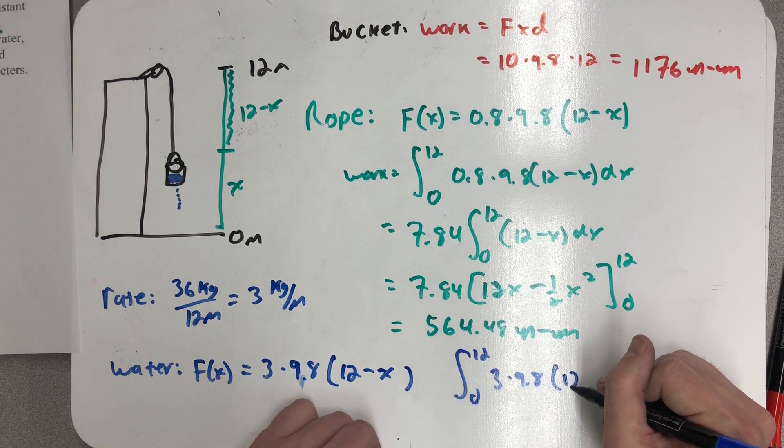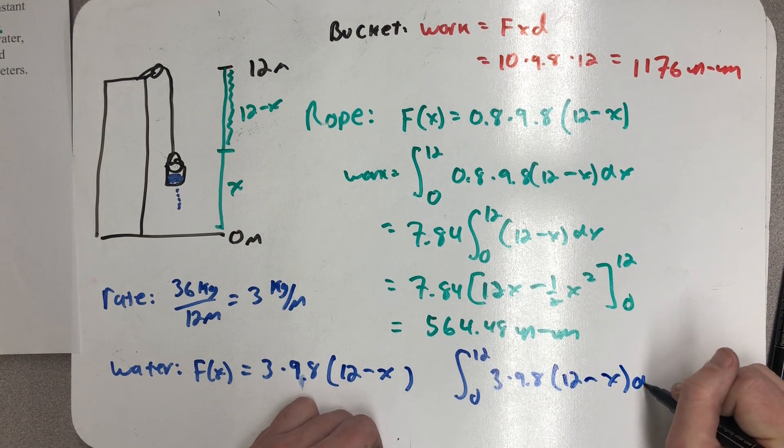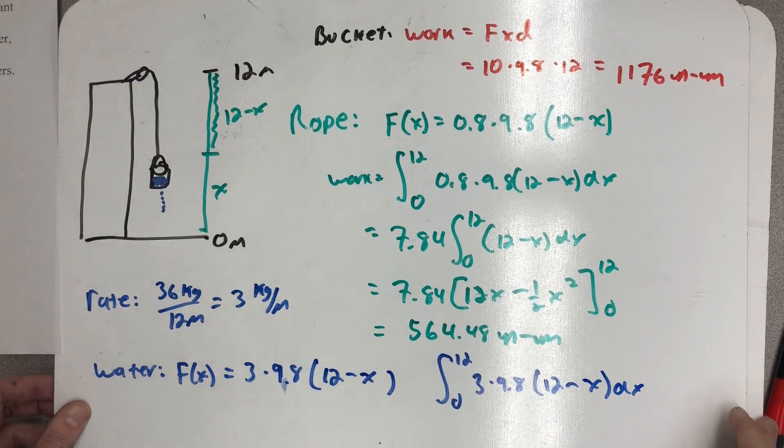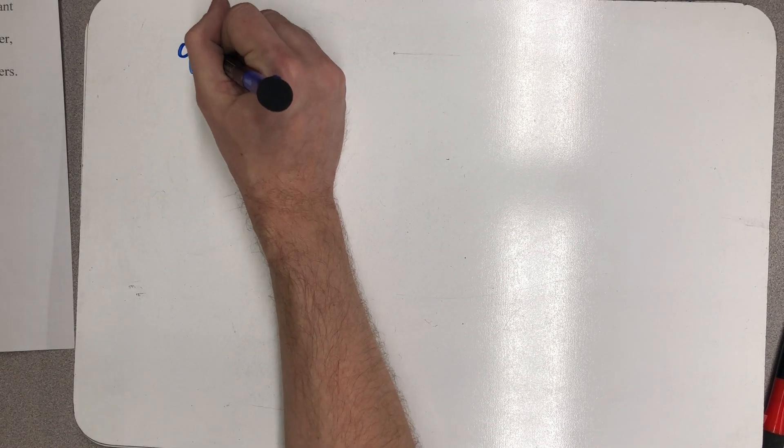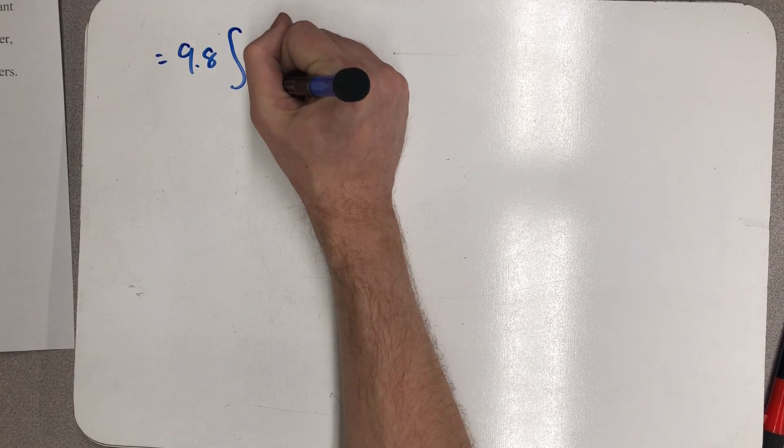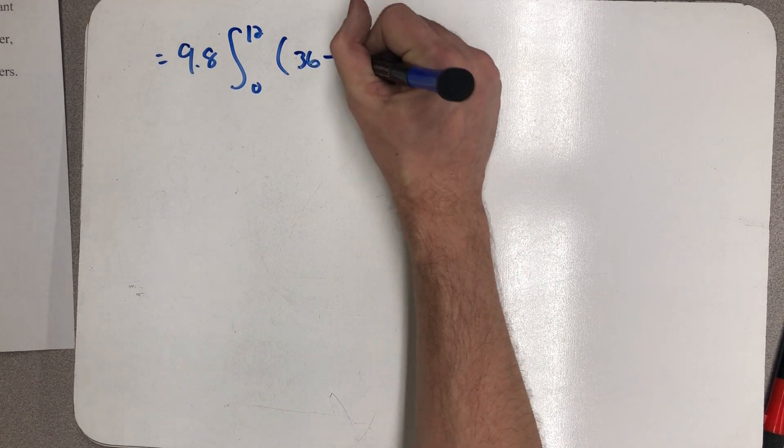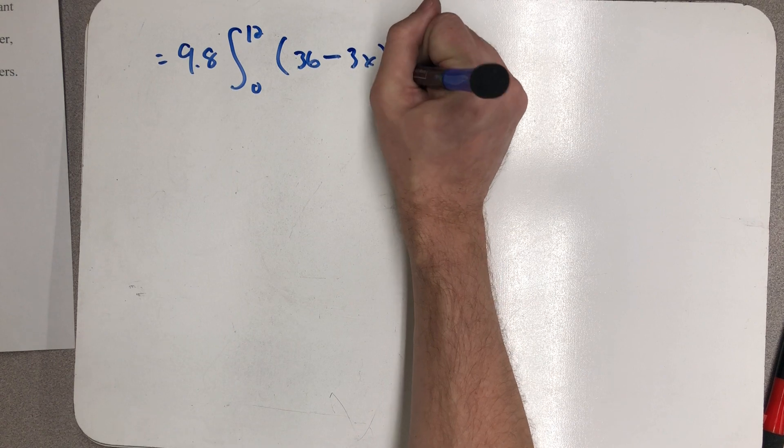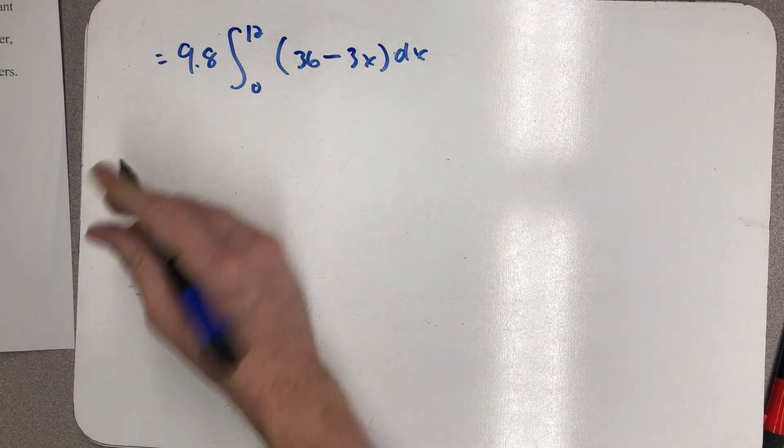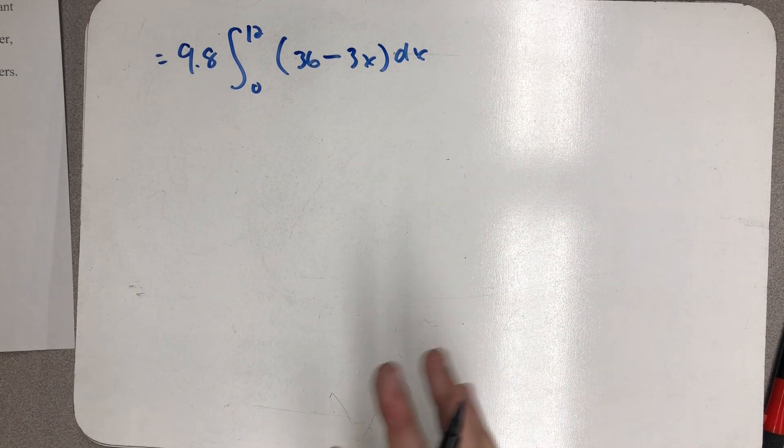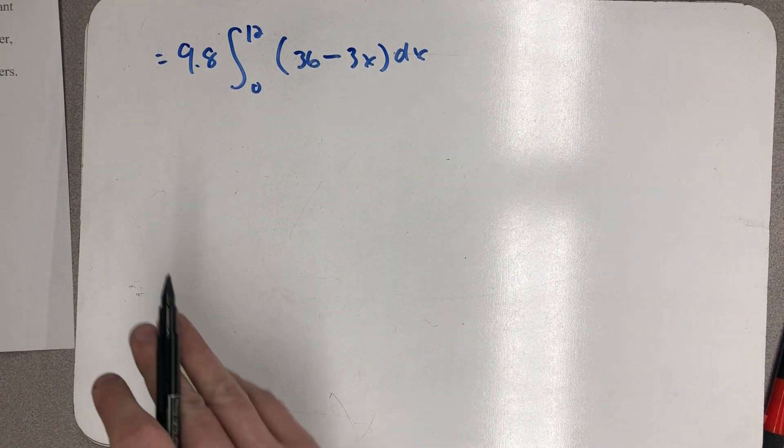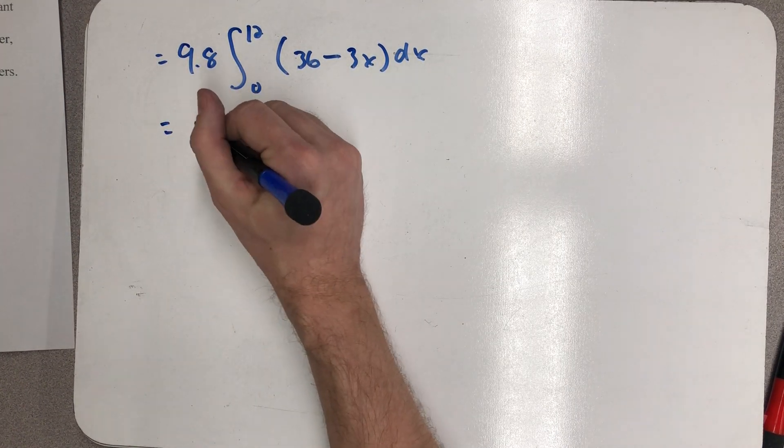3 times 9.8 and then 12 minus x dx. I'm going to integrate that on the next board over. When I did this earlier I chose to factor the 9.8 out and distribute the three through. You could also factor the three out and multiply it to the 9.8, or you could multiply the 9.8 through and integrate everything at once.